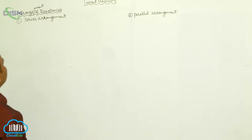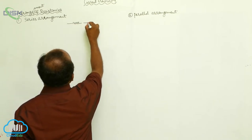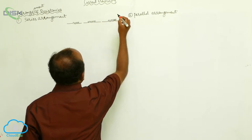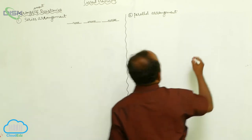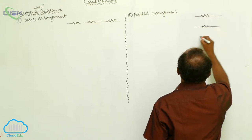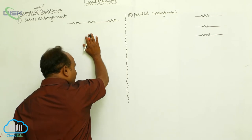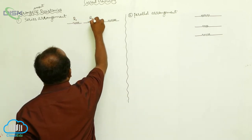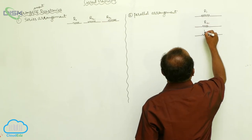Now, two or more resistances are available. Here is the first resistance, the second resistance, and the third resistance. In one circuit, there are three resistances with values R1, R2, and R3. In another circuit, there are also three resistances with values R1, R2, and R3.